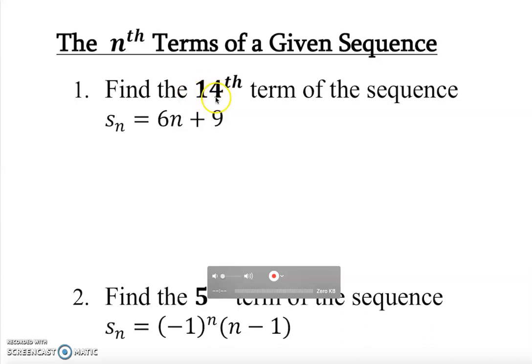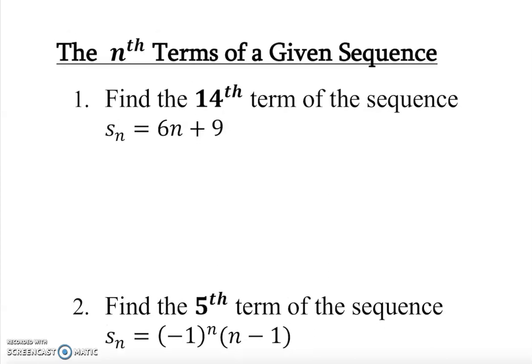We just substitute n with 14. n is going to be my 14th. We just substitute it. Basically, it's only the concept of substitution. So s sub 14 is equal to 6 times 14 plus 9.